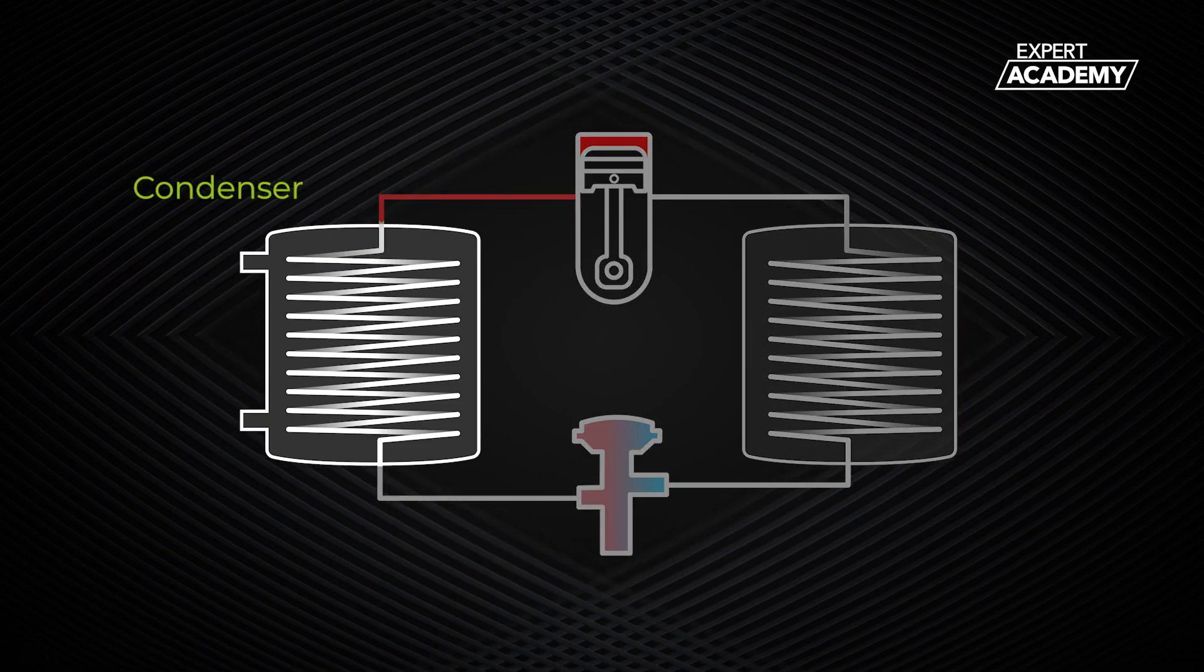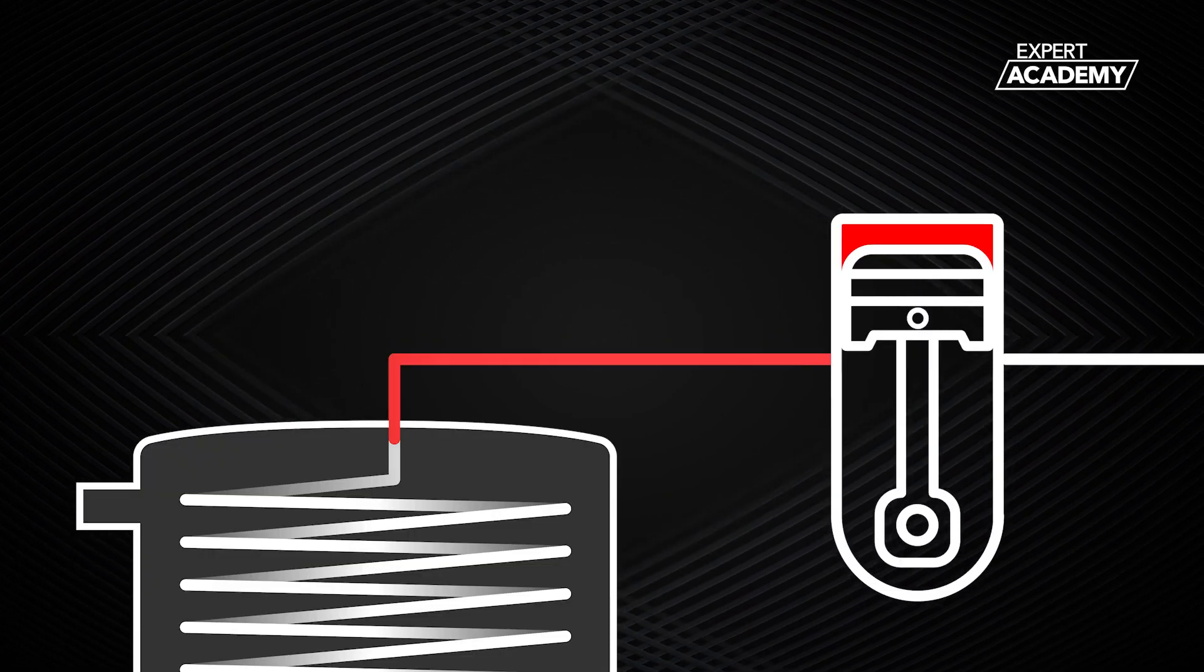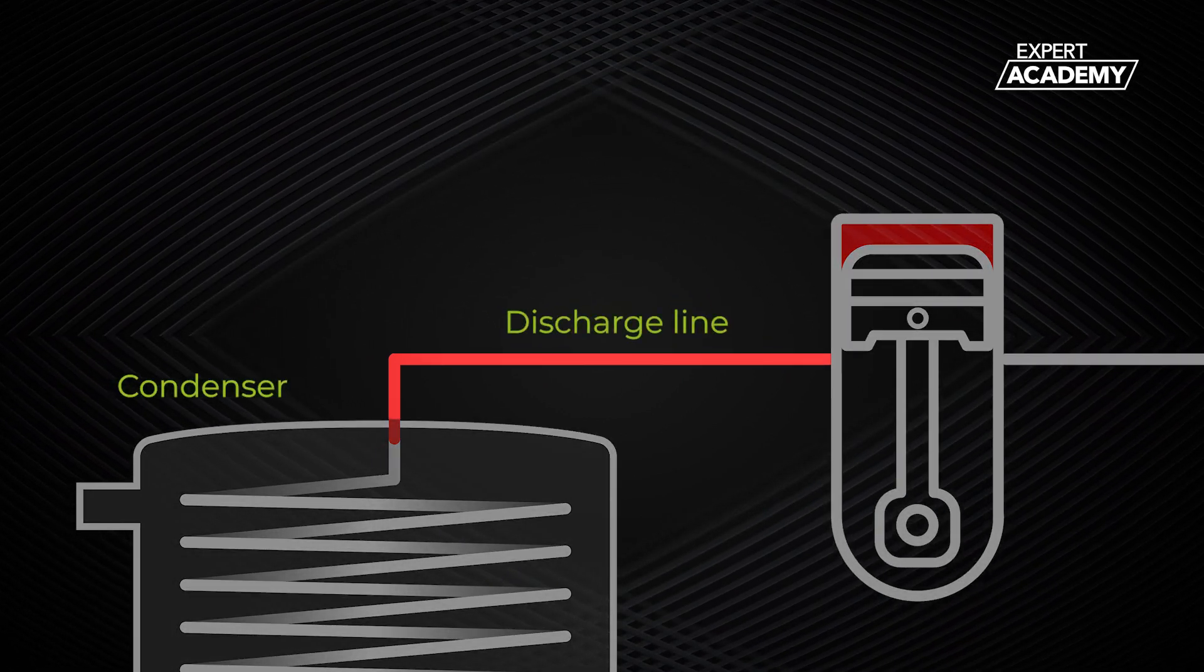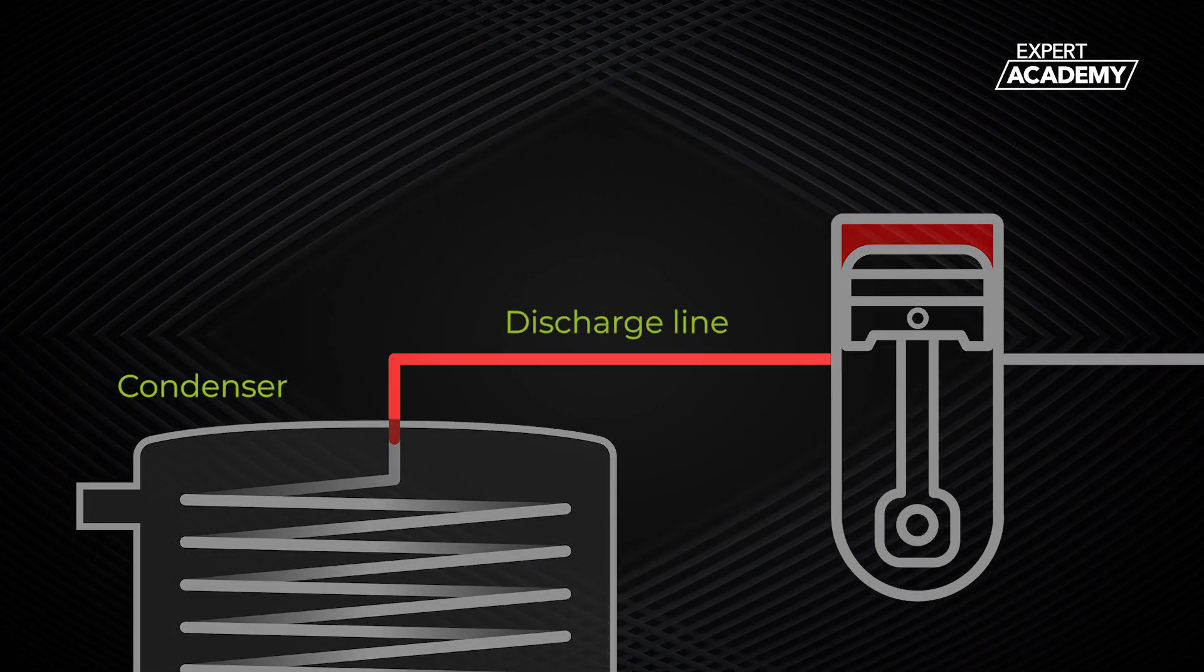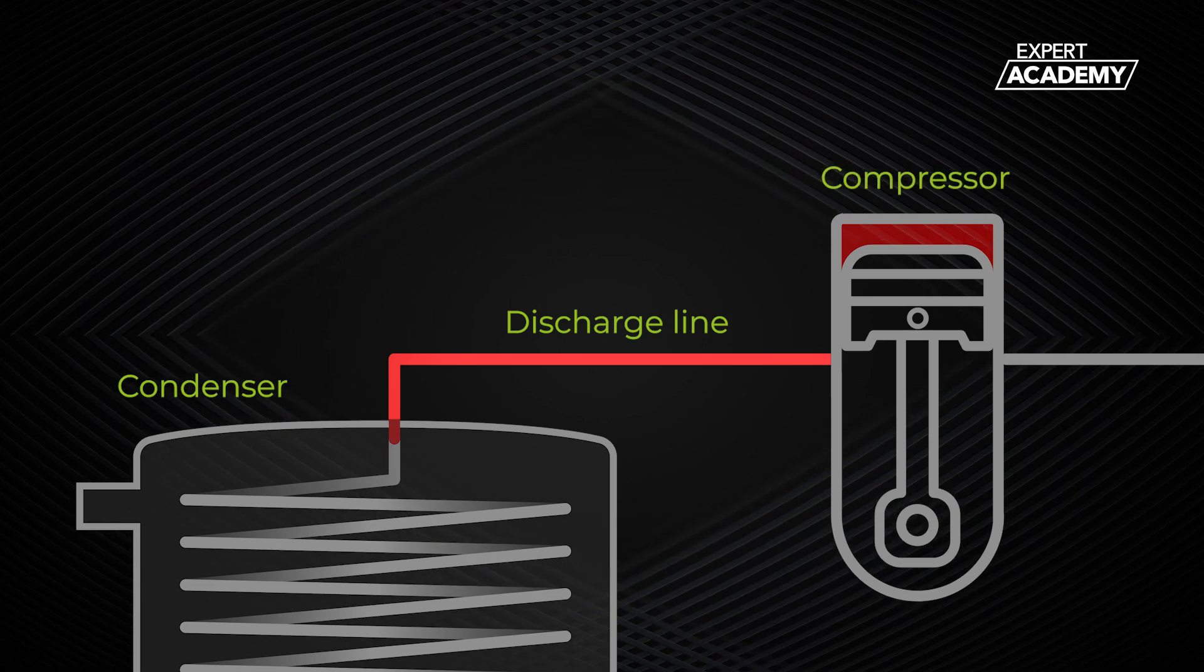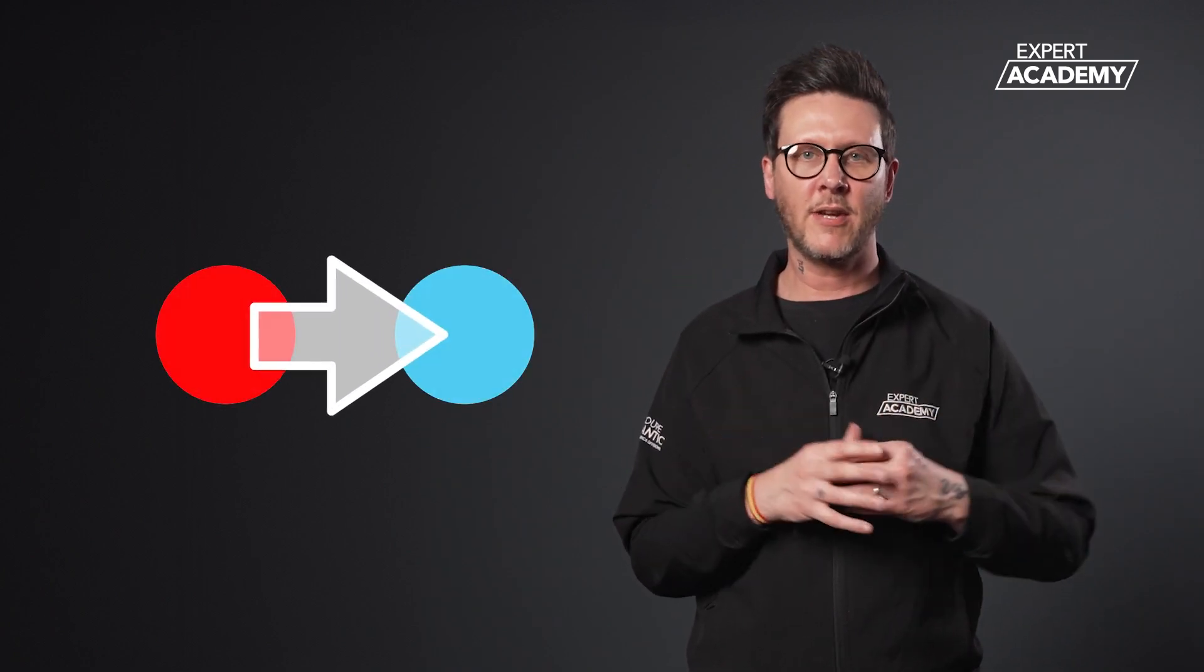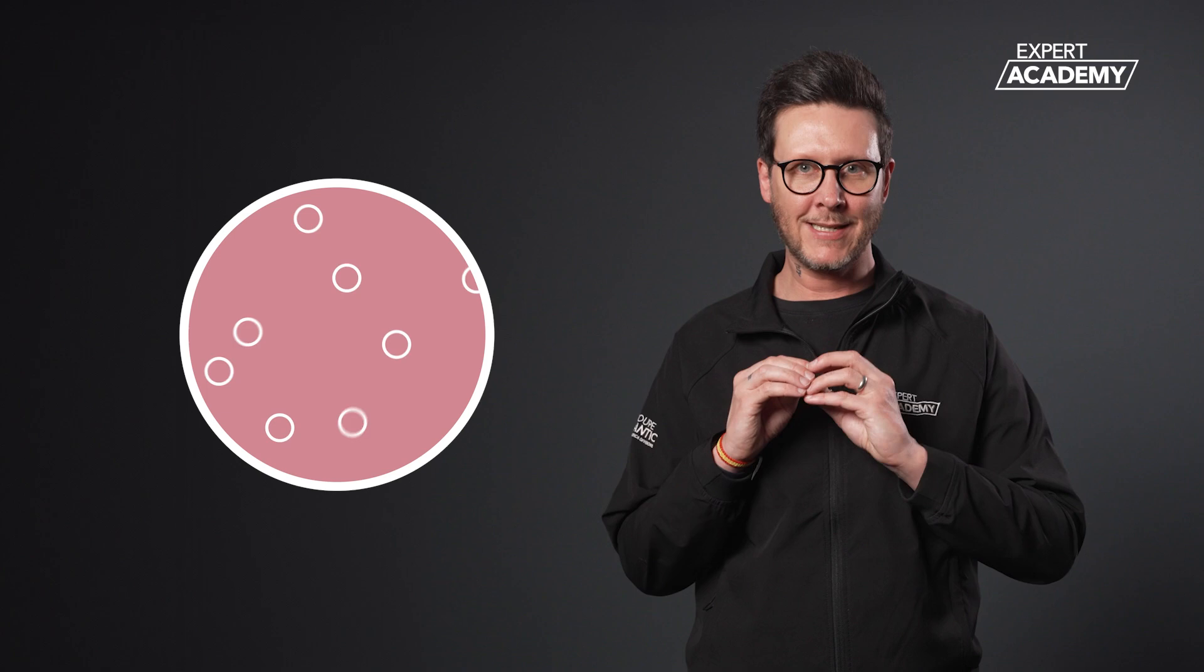The next stage is the condenser. The high pressure, high temperature vapor enters the condenser via the discharge line. The discharge line connects the compressor to the condenser. Remembering that heat moves from areas of higher temperature to areas of lower temperature. The greater the difference, the bigger the transfer. And when we cool a vapor down it condenses, changing state from a gas to a liquid, releasing or rejecting the heat energy it has absorbed.